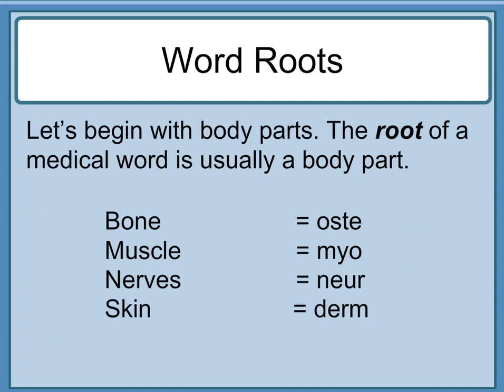Let's begin with body parts. The root of a medical word is usually a body part. Bone equals 'oste-'. Muscle equals 'myo-'. Nerves equal 'neur-'. Skin equals 'derm-'.